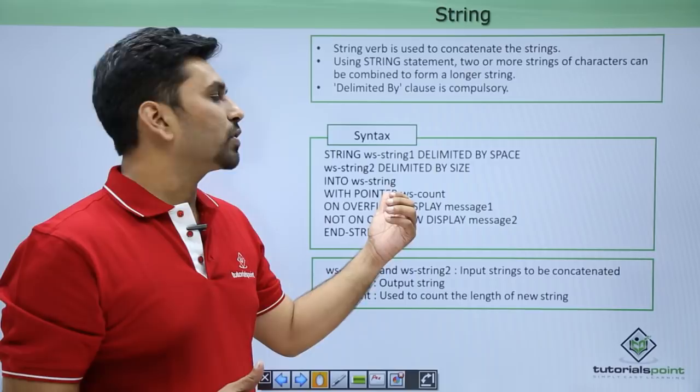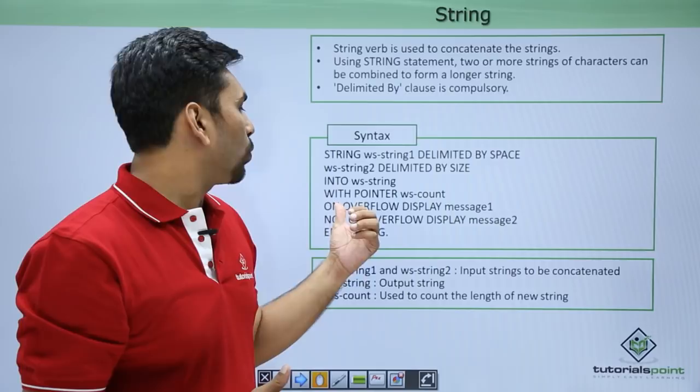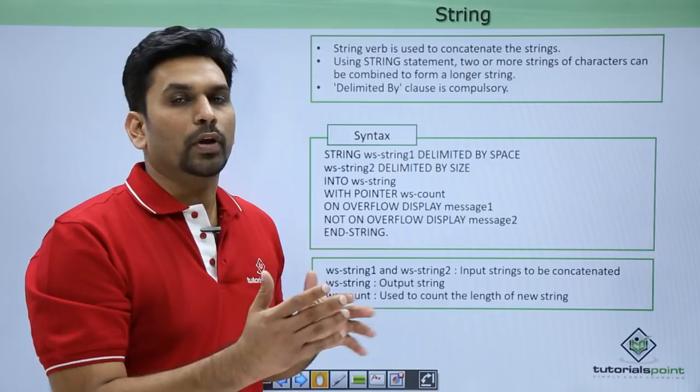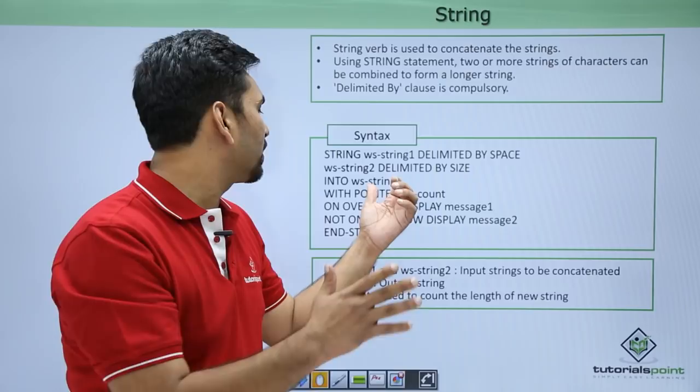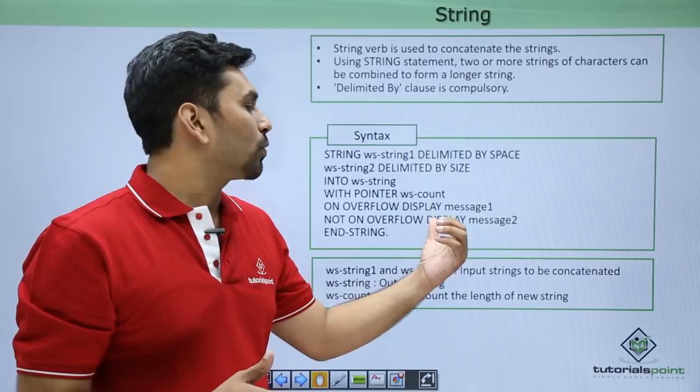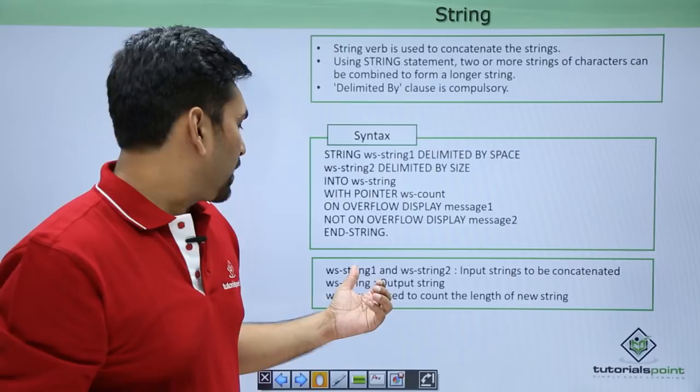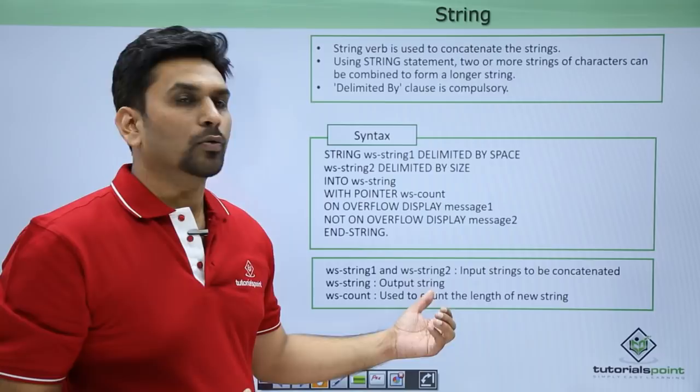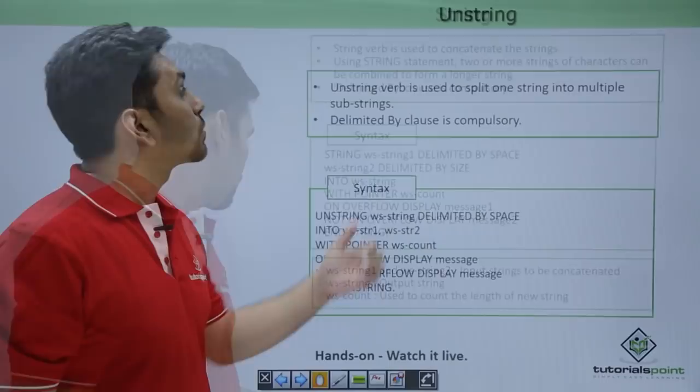The WITH POINTER option is used to count the number of characters concatenated in W-STRING. ON OVERFLOW and NOT ON OVERFLOW are optional. If the combined string is too large for W-STRING, an overflow occurs and you can display a message. Otherwise, NOT ON OVERFLOW lets you display a success message. You must end with END-STRING. W-STRING-1 and W-STRING-2 are the input strings to be concatenated, W-STRING is the output, and W-COUNT tracks the length of the new string.